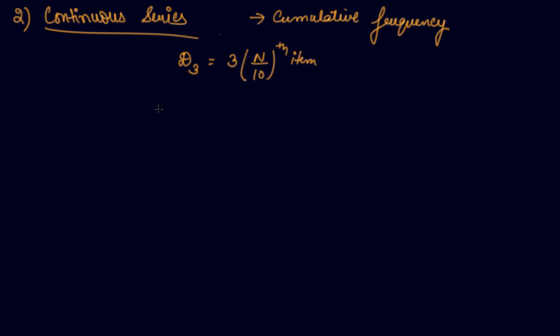Then you will find the item in the cumulative frequency and you will find out the deciles class. Now in order to find the deciles 3, you will use this formula. You will find out the deciles class, then the lower limit of the deciles class plus 3 n by 10 minus cf, cumulative frequency of the preceding deciles class, divided by frequency of the deciles class into i, the size of the deciles class.